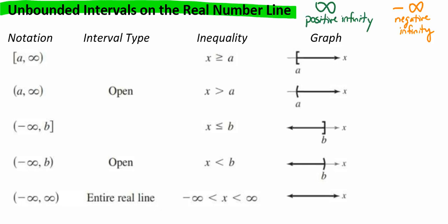Positive infinity and negative infinity don't represent real numbers. They're simply convenient symbols used to describe the unboundedness of the interval. For example, if we had something like 1 comma negative infinity, that would tell us that we were going to have something that started at 1 and went on forever — any number less than 1.